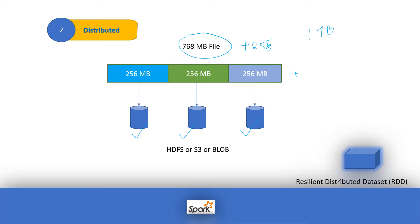Adding another 256 MB chunk to the same file — this chunk can be distributed to another machine. This distribution nature means we can process large files with increased processing power. This is similar to the capability Hadoop provides, and RDDs also provide this kind of distribution. This is one of the biggest advantages when playing with big datasets.